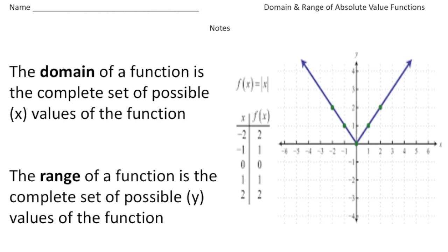Let's briefly review what exactly the domain and range of a function are. The domain of a function is the complete set of possible x values, and the range of a function is the complete set of all possible y values. The key word here is 'possible.' So basically all the possible x values are the domain, and all the possible y values are the range. Please underline those two words.